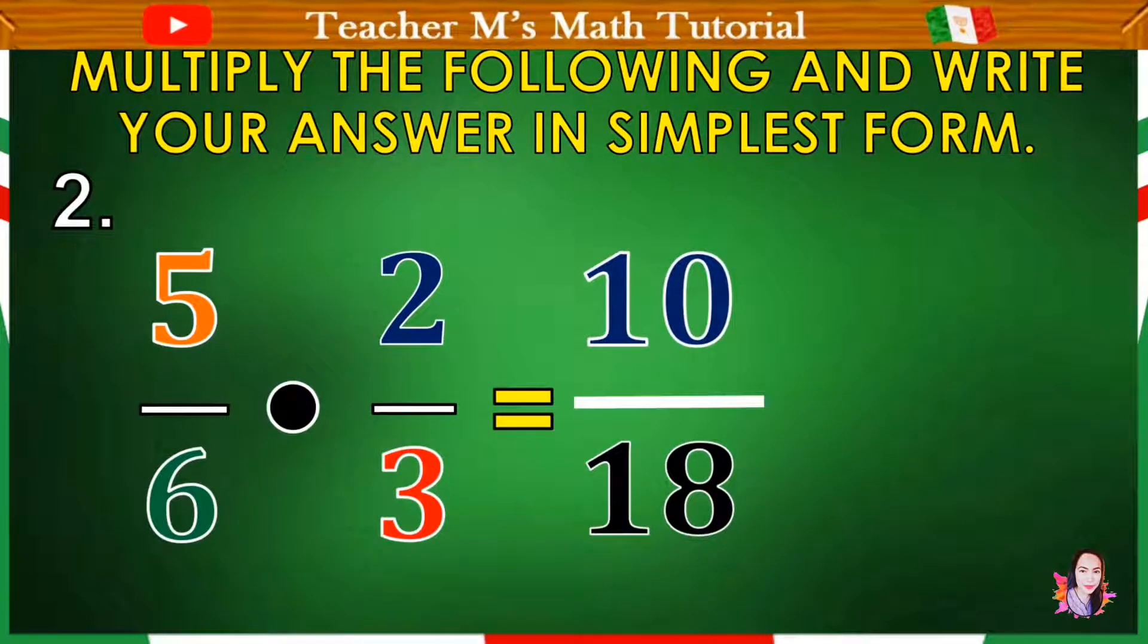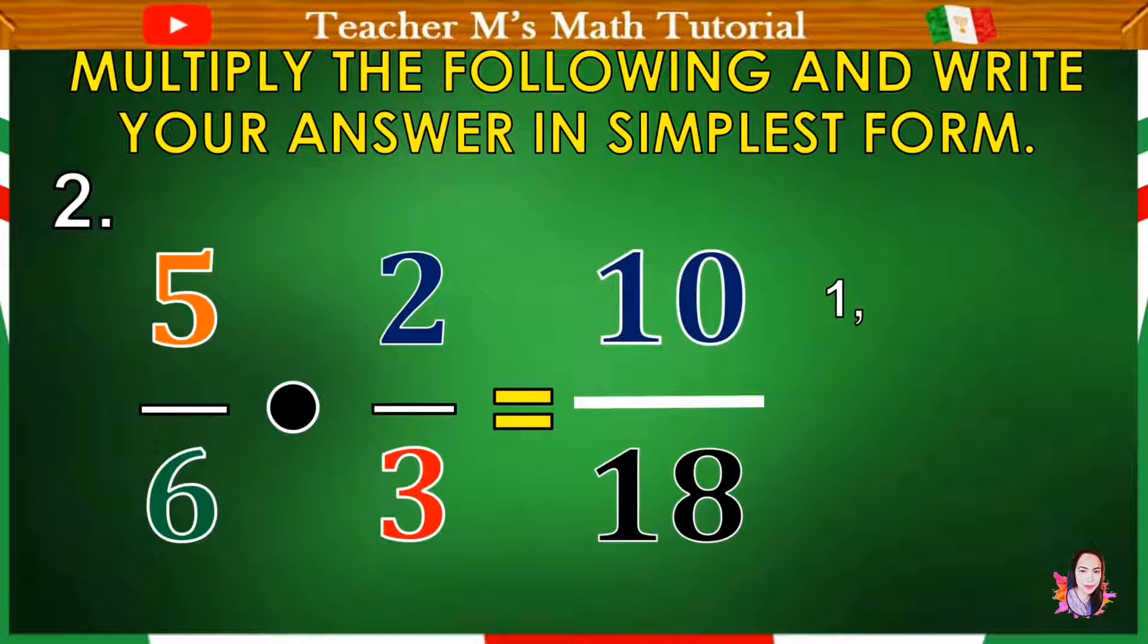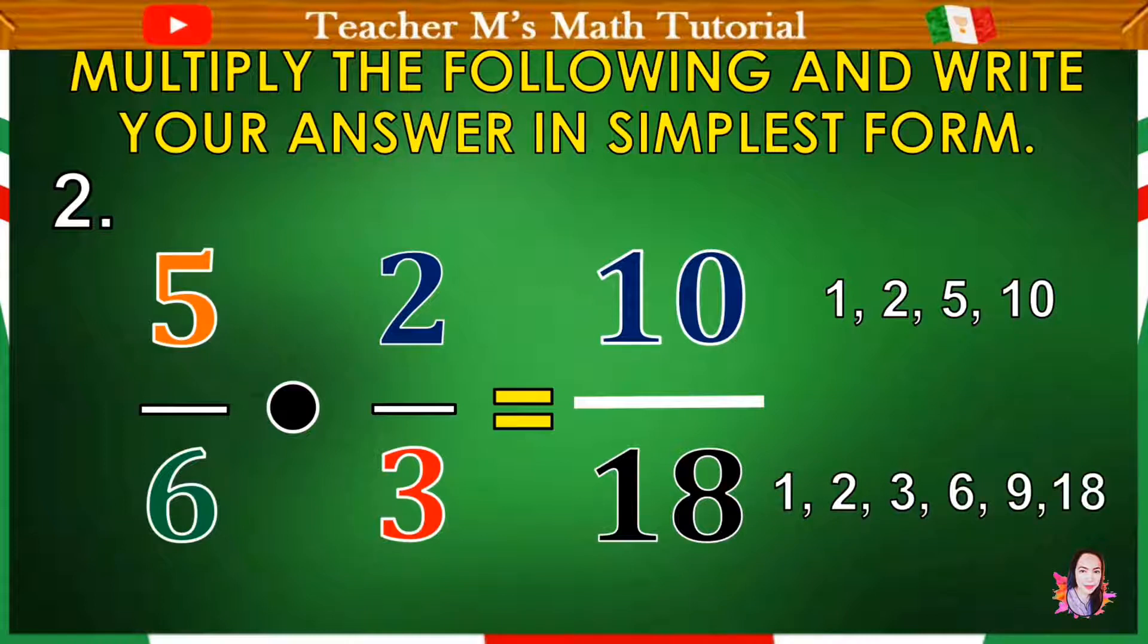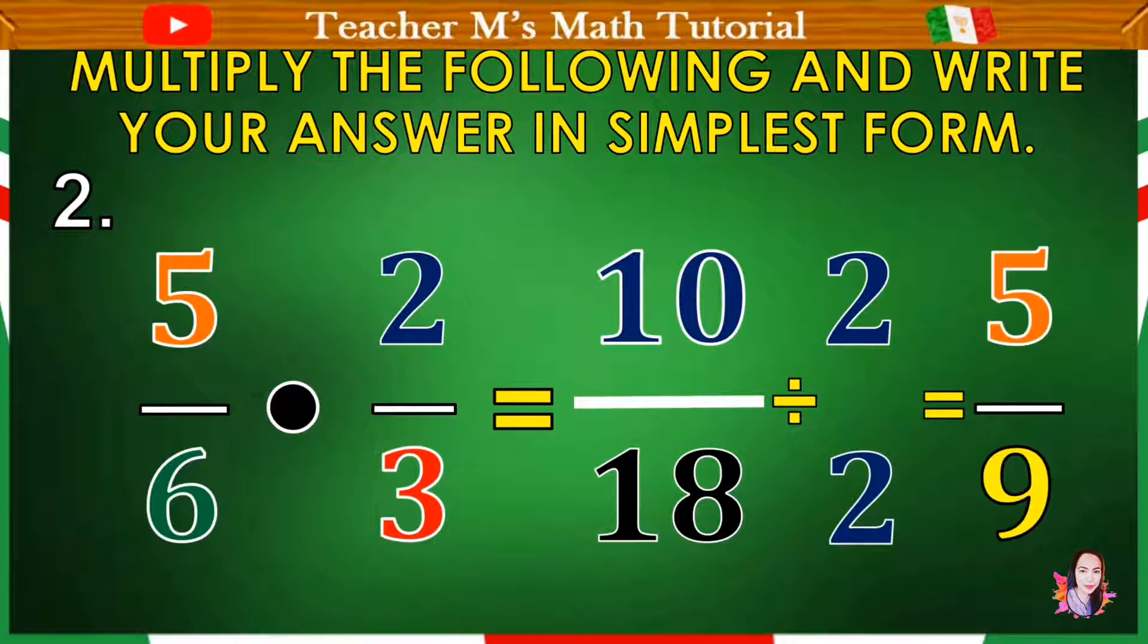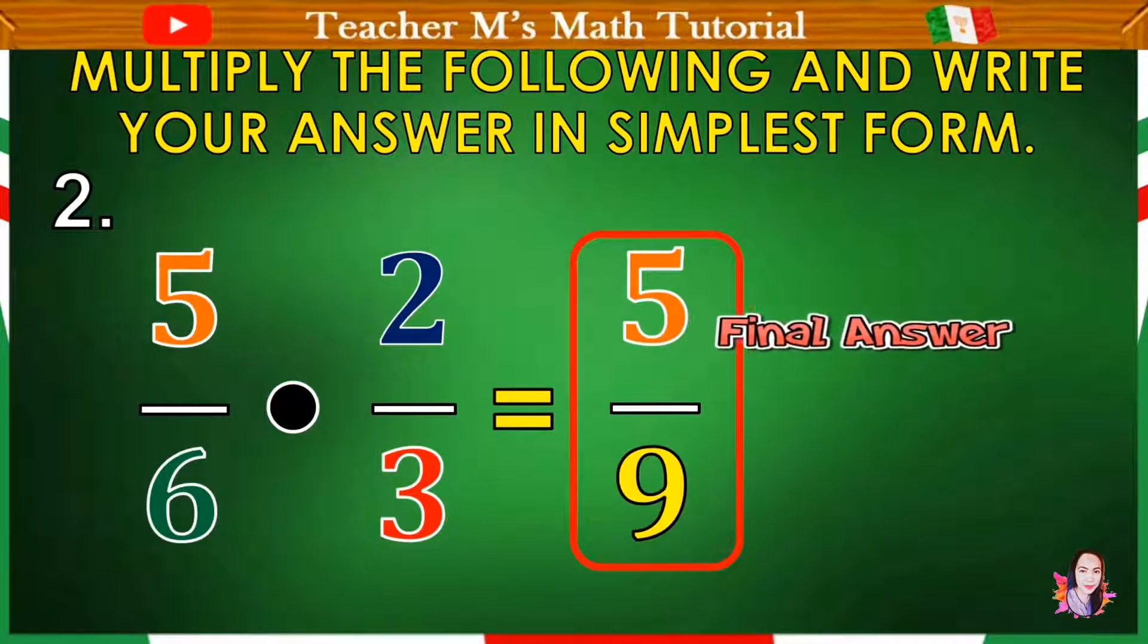And this time, we can reduce it by getting the GCF of 10 and 18. What are the factors of 10? So we have 1 times 10, 2 times 5. So the factors are 1, 2, 5, and 10. And in 18, we have 1 times 18, 2 times 9, 3 times 6. All those are factors of 18. So getting GCF, the greatest common factor will be 2. We need to divide 10 and 18 by 2. 10 divided by 2 equals 5. 18 divided by 2 equals 9. So the product of 5 over 6 and 2 over 3 is 5 over 9. That will be the final answer.